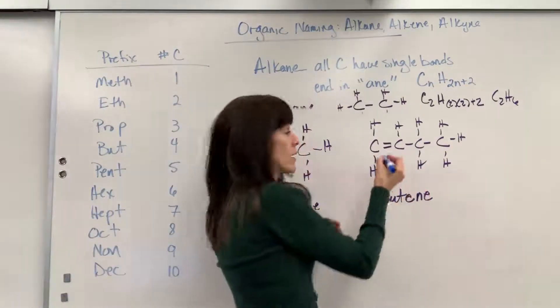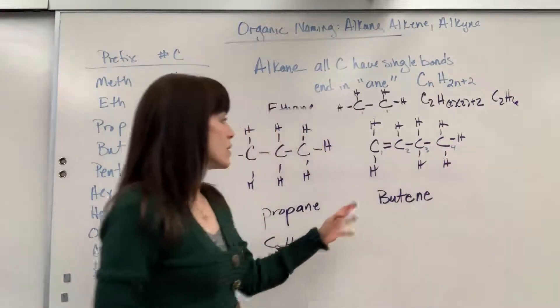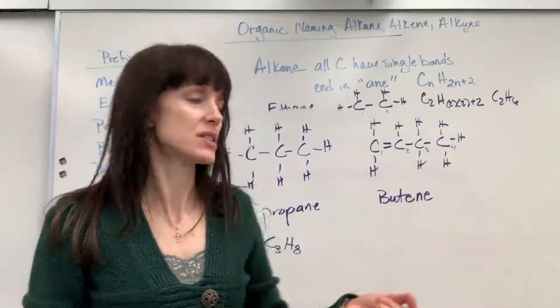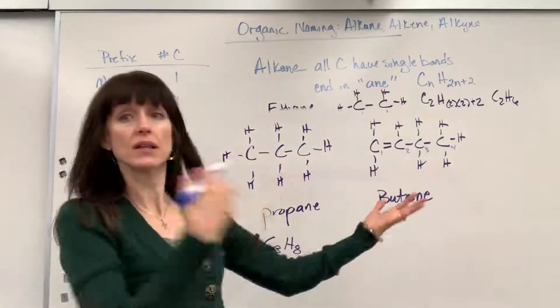If I number my carbons, I'd have one, two, three, four. So looking at these carbons, the lowest number carbon that touches the double bond is one. So keep that in your head.